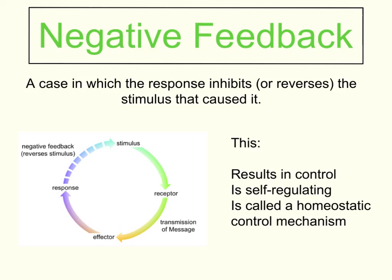First of all, negative feedback. We've looked at the stimulus response model already. Negative feedback is a special case in which the response inhibits or reverses the stimulus that caused it. So we have a stimulus detected by a receptor, there's a transmission of a message, an effector produces a response, and that response actually reverses the original stimulus. This is what we call negative feedback, and this process results in control. It's a self-regulating process called a homeostatic control mechanism — basically a term meaning it keeps things at a particular level, keeps them the same.